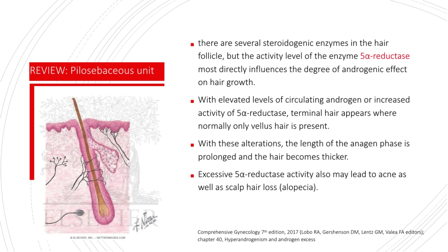There are several steroidogenic enzymes in the hair follicle, but the activity level of the enzyme 5-alpha reductase most directly influences the degree of androgenic effect on hair growth. With elevated levels of circulating androgen or increased activity of 5-alpha reductase, terminal hair appears where normally only vellus hair is present. With these alterations, the length of the anagen phase is prolonged and the hair becomes thicker. Excessive 5-alpha reductase activity may also lead to acne as well as scalp hair loss or alopecia.